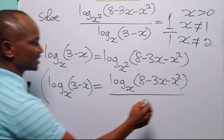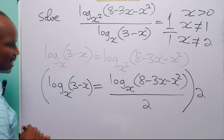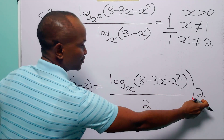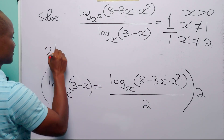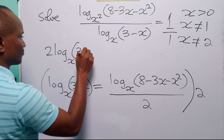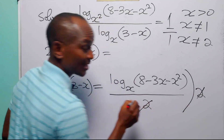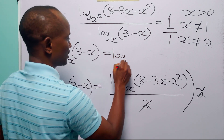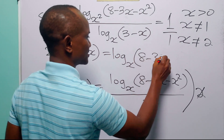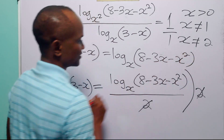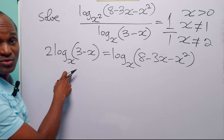To get rid of this denominator, let us multiply through the equation by 2. When we do this, we have 2 times log base x of (3 minus x) is equal to log base x of (8 minus 3x minus x²).